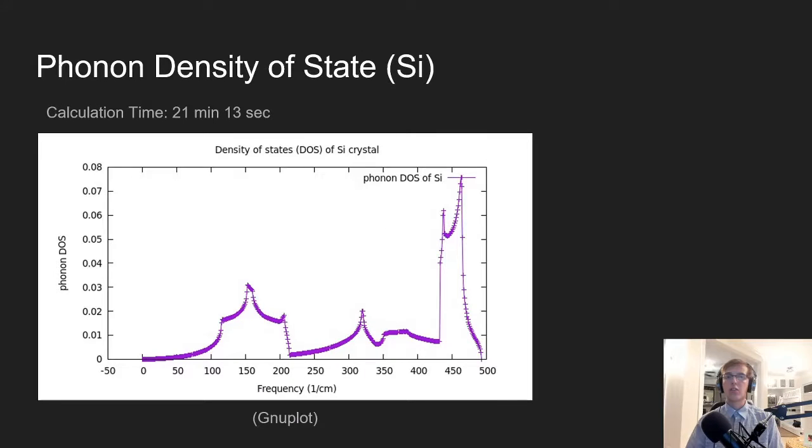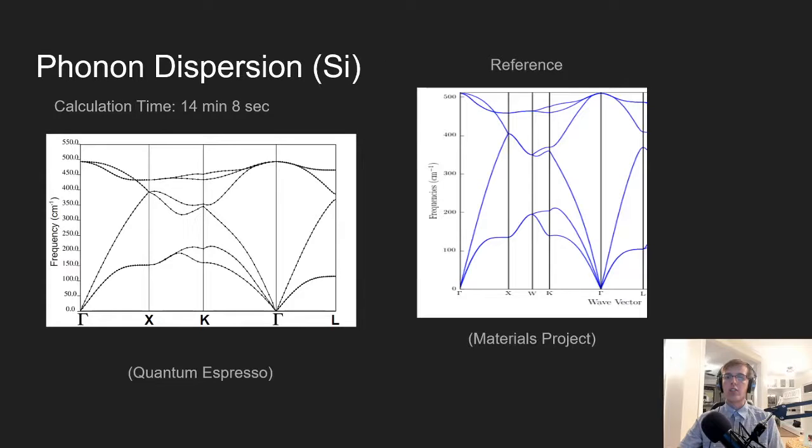The final calculation that we did was the density of states for silicon and you can see that its phonon dispersion calculation is the same as a reference with the only difference being that they took a different path than I did in my calculations on the left. What they did was they went to an extra point in reciprocal space that they called W, but if you were to remove that point then it would have the exact same phonon dispersion calculations.